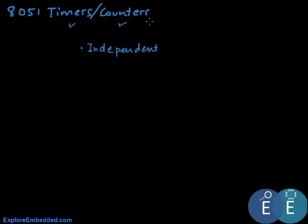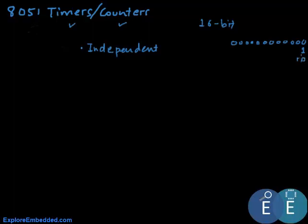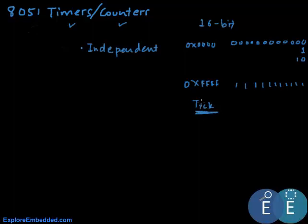The 8051 has two timer/counter units and both are 16-bit. On every tick the timer increments — starting from all zeros across all 16 bits. In hex, they start from four zeros and end at FFFF. Each increment is called a tick, and the duration of one timer tick depends on whether the unit is configured as a timer or a counter.